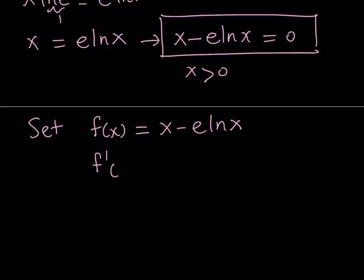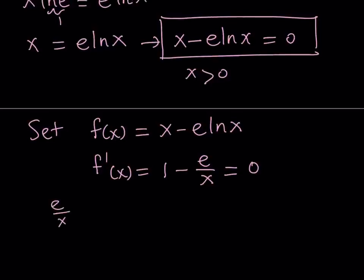The derivative is very easy. The derivative of x is 1. The derivative of ln(x) is 1 over x, and e being a constant, it's just going to be e times 1 over x, which is e over x. So the derivative of f is 1 minus e over x. We proceed by setting that equal to 0 to find the critical values. From here, e over x equals 1, which implies that x equals e.